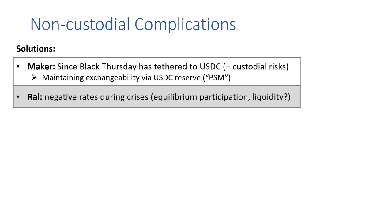Another approach is taken by RAI, which institutes negative rates on stablecoins during a crisis. This means that if we're in a deleveraging spiral, stablecoin holders are incentivized to sell their stablecoins, or else they incur an insurance-like fee due to the negative rate. This leads to further questions about what the equilibrium participation might be like if rates are expected to be negative for substantial periods of time, as well as questions about how liquid the stablecoin will be in different settings.